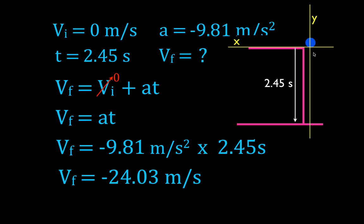The object is falling down, therefore the velocity has to be negative, and it's good to keep your negatives and positives straight. So that's the answer: if an object in free fall takes 2.45 seconds to fall through the distance, it's going to have a final velocity of 24.03 meters per second in the negative direction. Therefore we have a negative sign in front of our velocity.